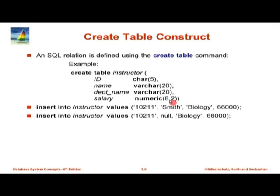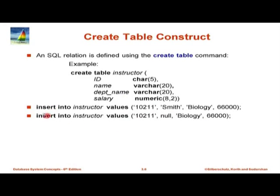So varchar might be more appropriate here for many enterprises. Then there is department_name and salary as numeric(8,2), meaning 2 digits after the decimal and 6 before — we are insisting nobody can get more than a 6-digit salary. This kind of restriction can come back to haunt you. At IIT Bombay we had a limit of some number of characters and somebody had a very large consultancy project and overflowed that amount, so the program had to be rewritten and the database schema had to be changed to accommodate that. Then we can insert things into a table using INSERT INTO instructor VALUES.